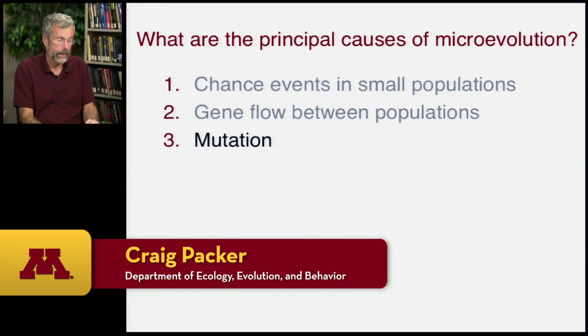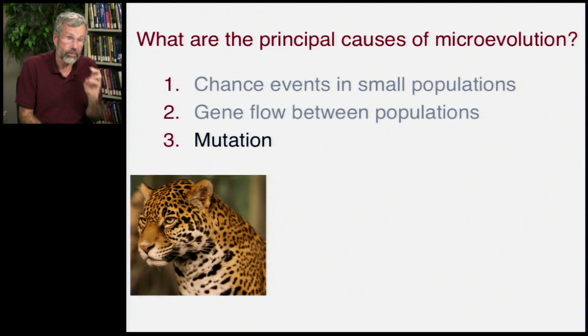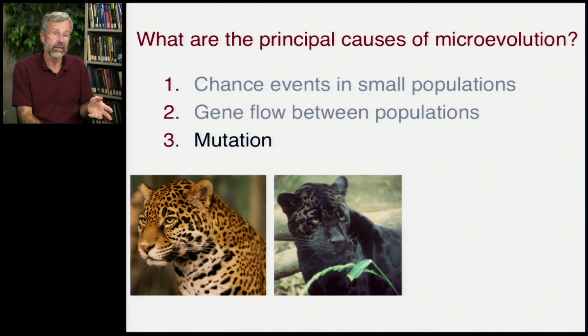Microevolution also results from mutation. We can have a perfectly normal phenotype, everybody looks pretty much the same, and there might be a mutation that causes darker coloration.